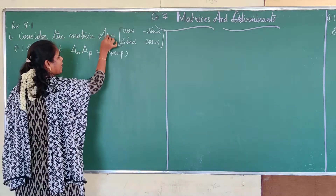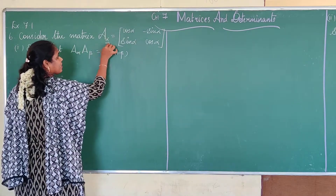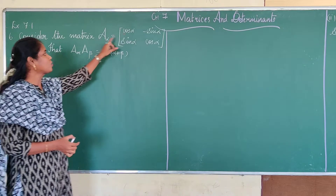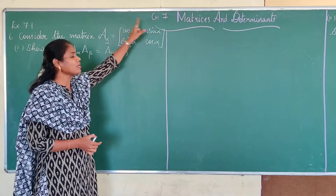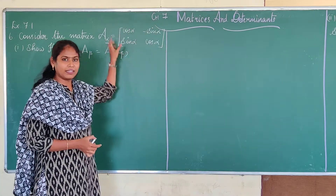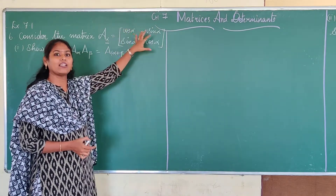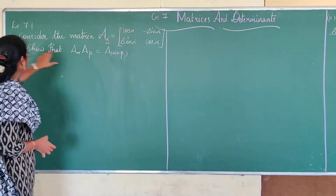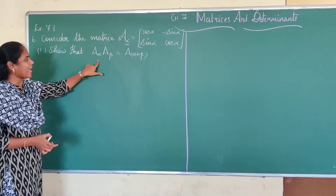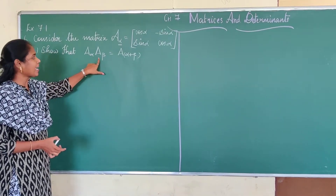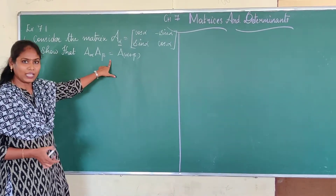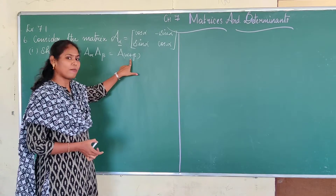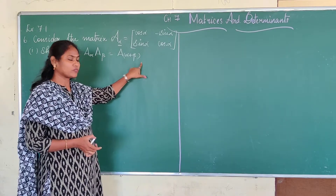A matrix with the suffix angle α means elements in the matrix involve an angle α. We have to show that A(α) · A(β) = A(α + β).